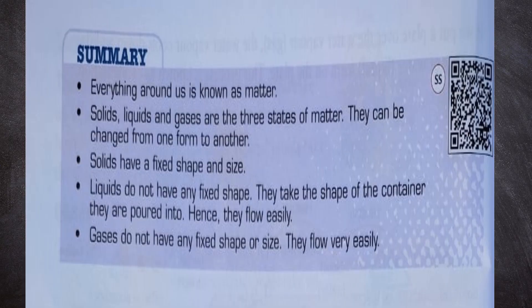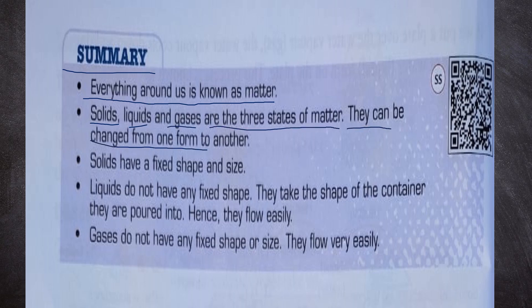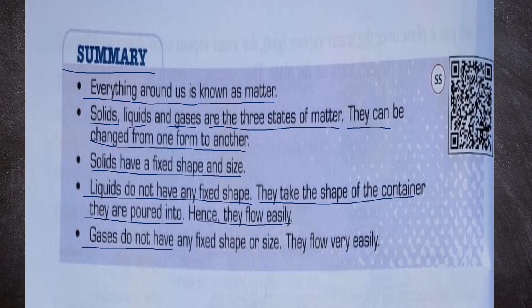Summary of the lesson. Everything around us is known as matter. Solids, liquids and gases are three states of matter, and they can be changed from one form to another. Solids have a fixed shape and size. Liquids do not have any fixed shape — they take the shape they are poured into and flow easily. Gases do not have any fixed shape or size and flow very easily.